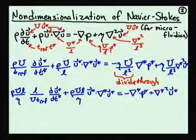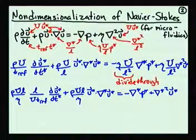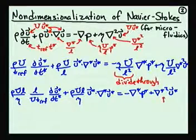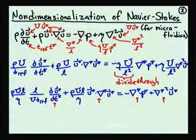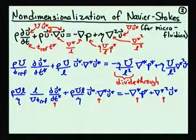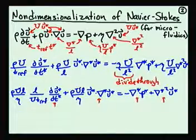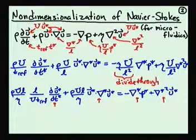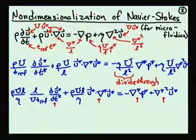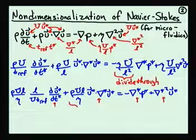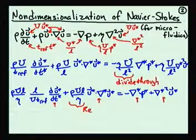This equation has four derivative terms, all cast in terms of non-dimensional parameters. If we've non-dimensionalized these values correctly, we hope that all of these non-dimensional derivative terms are of order one everywhere in the flow. The relative magnitudes of these different terms are then dictated not by the derivatives themselves, but by the pre-multiplying factors. Looking at these pre-multiplying factors, we can identify one of them as the Reynolds number.